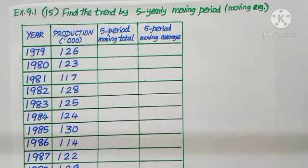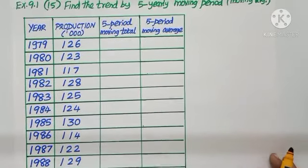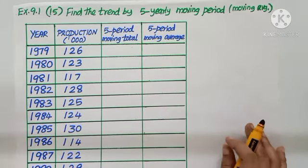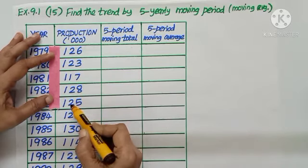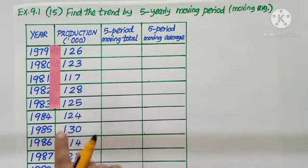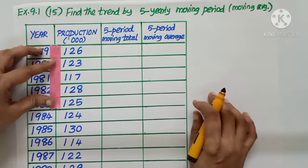Question number 15: Find the trend by five-yearly moving period. Now the moving average method claims to use five period moving average. The data given is from 1979 to 1989. We have to keep on adding right from 1979, each time add five values. So check like this way: I am going to add 1, 2, 3, 4, 5 values. Add up 126, 123, 117, 128, 125, adding the five values.